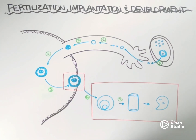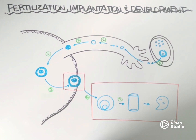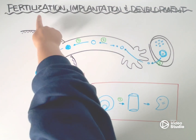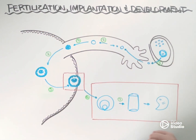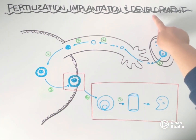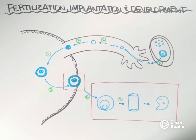Hi everyone and welcome to Shookin Science. In this video we'll walk through some of the steps involved in sexual reproduction in humans, including fertilization, implantation, and some of the early stages of embryonic development.